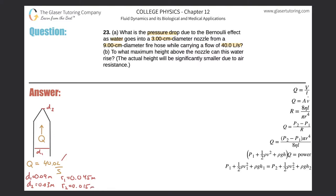Another thing I noticed is that Q has liters per second. We have to convert that to cubic meters per second. To convert liters to cubic meters, just take the value divided by 1,000. So this now becomes 0.04 cubic meters per second. I'll try to remember the sig figs at the end — just too many zeros to write.